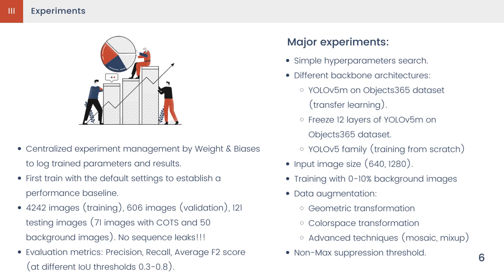Regarding the experiments, we use the Weights and Biases platform to centralize the logs of trained parameters and the results. This supports the comparison substantially. We divided the dataset into training 86%, validation 12%, and the rest for testing dataset. Additionally, 50 background images — the ones without any starfish — are used for testing purposes as well. We don't allow any sequence leaks to ensure the reliability of the validation and the testing results. The evaluation metrics used include precision, recall, and average F2 score at different intersection over union thresholds. Because we focus on detecting as many starfish as possible at a high accuracy rate, we use the F2 score to emphasize the importance of recall.